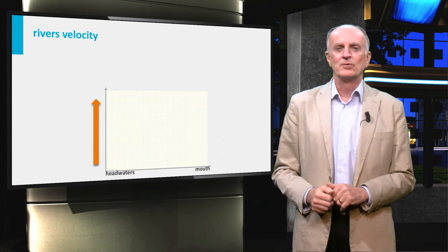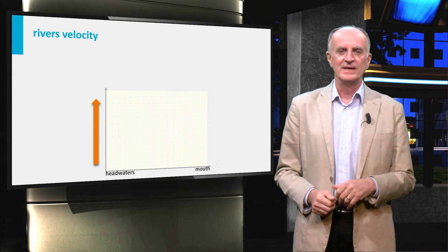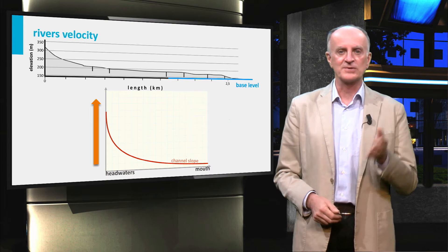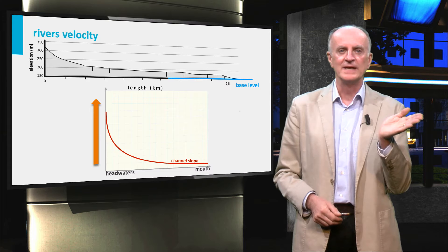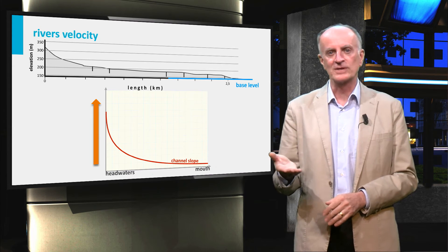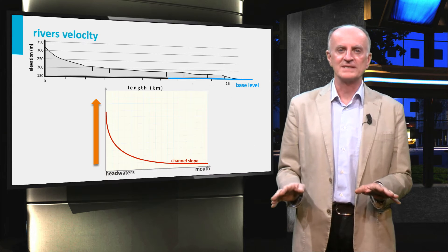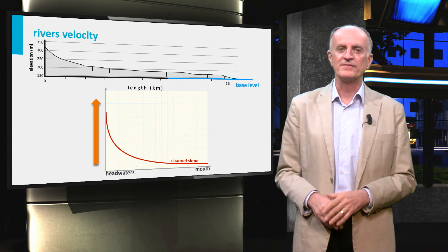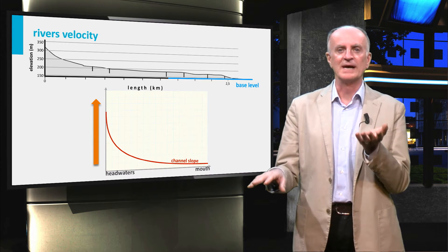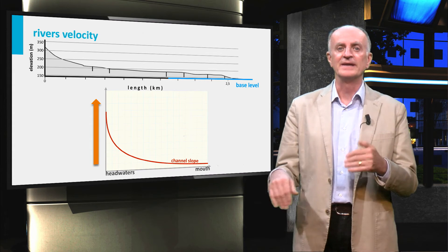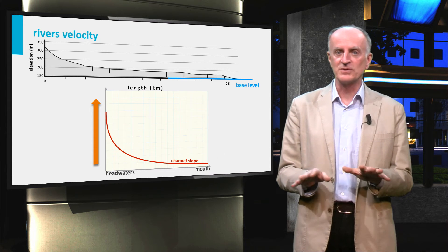Let us briefly look at changes in velocity and channel sections along the river. A very important feature controlling the water velocity is the gradient of the river. Rivers in stable settings are steep close to their source and become gentler, asymptotically reaching a horizontal level called base level. The most obvious base level is the sea. Their profile is generally stable, but if the base level is modified, for instance by tectonic uplift or sea level change, then the river will start eroding or depositing in order to go back to equilibrium.